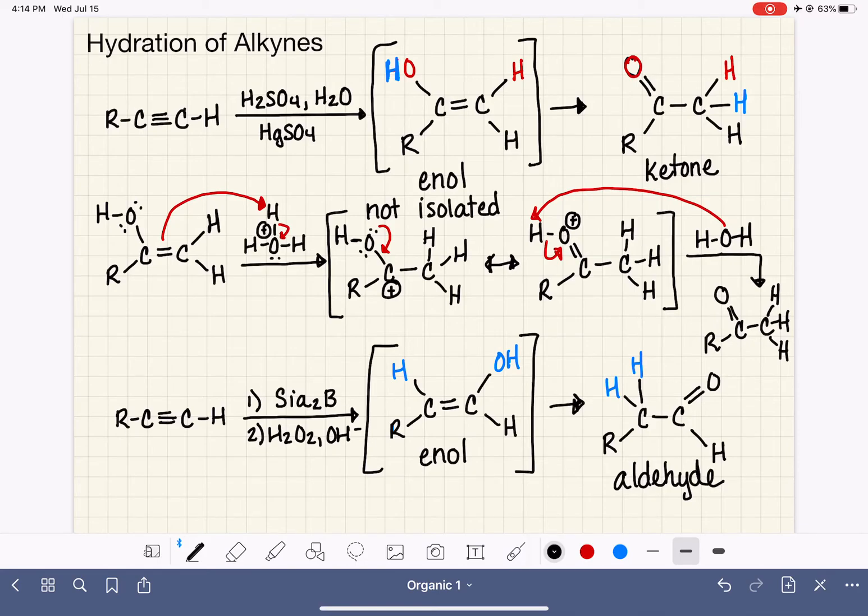Before we move on to look at a couple examples, there is one alternative to the reagents that we use for this reaction. So in step one, you could also use a reagent called 9-BBN. Step two would still be the same.